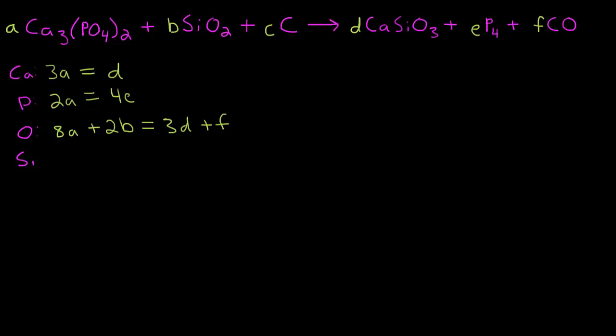So we have one silicon in the B and it looks like we have one in the D. So that's easy enough. And our last equation is carbon. So we have a single carbon on the left in the C molecule and a single carbon on the right in the F molecule. So C equals F.